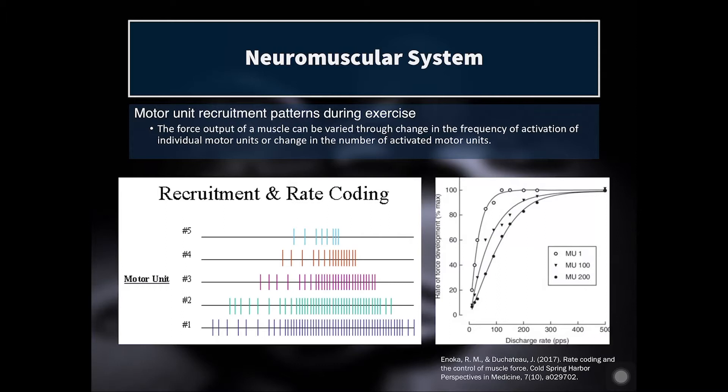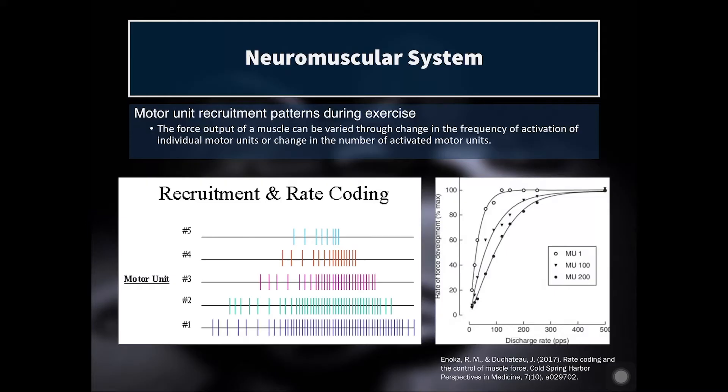Now let's talk about rate coding and recruitment. During exercise, you recruit motor units — not all at once, and not all for the entire time you're exercising. The force output of a muscle can be varied through the change in frequency of activation of individual motor units, or change in the number of activated motor units. The two key factors are frequency of activation and number of activated motor units.